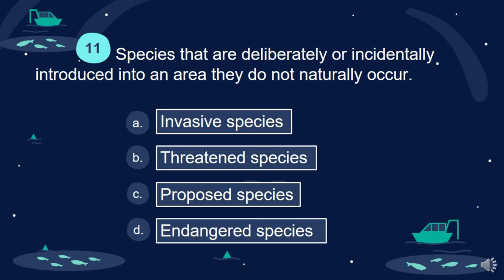Question 11. Species that are deliberately or incidentally introduced into an area they do not naturally occur: A. Invasive species. B. Threatened species. C. Proposed species. D. Endangered species.